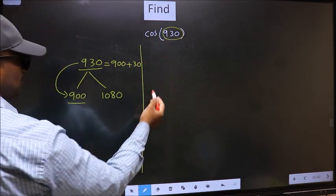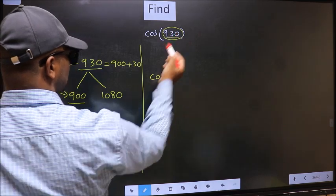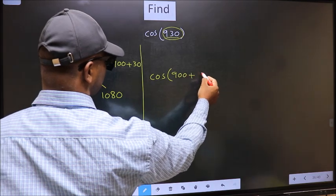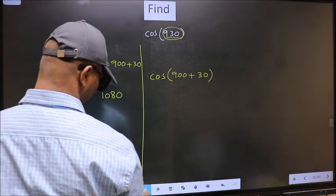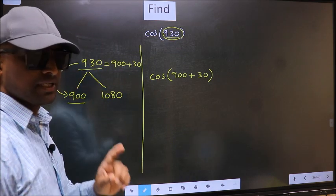So this will become cos. In place of this, we should write this now: 900 plus 30. This is your step 1.